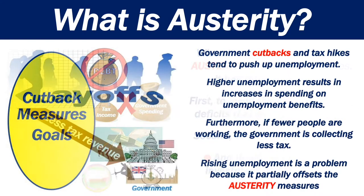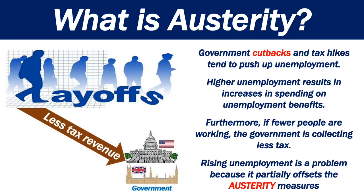Government cutbacks and tax hikes tend to push up unemployment. Higher unemployment results in increases in spending on unemployment benefits. Furthermore, if fewer people are working, the government is collecting less tax. Rising unemployment is a problem because it partially offsets the austerity measures.